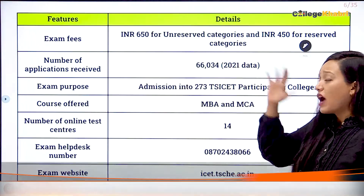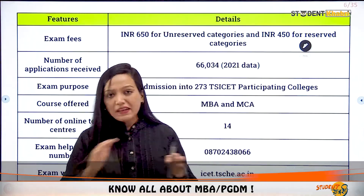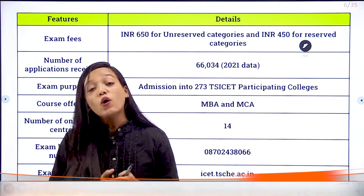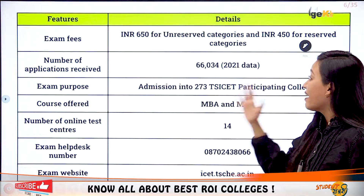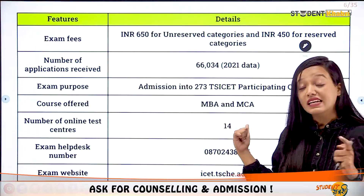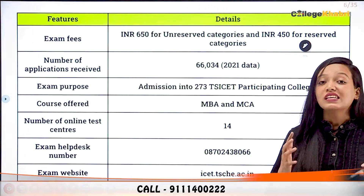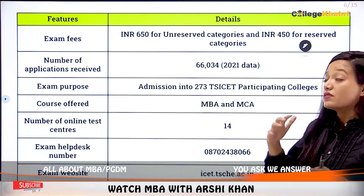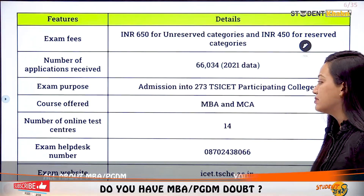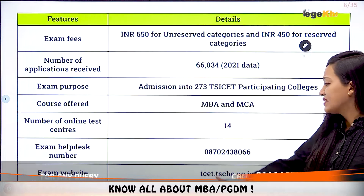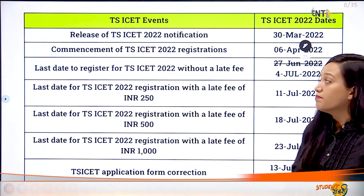The medium of the examination is English, Telugu, and Urdu. Exam fees are 650 rupees for general category and 450 rupees for reserved category students. Anyone can give this examination, but most applicants belong to Telangana. Near about 66,000 applications were received in 2021. The exam is for admission into 273 participating colleges for MBA and MCA courses. There are 14 online test centers, and the official website is icet.tsche.ac.in.